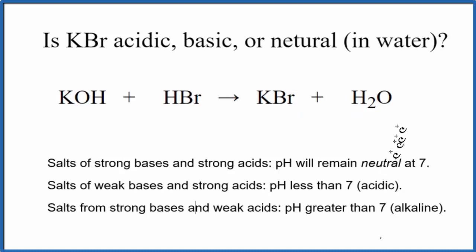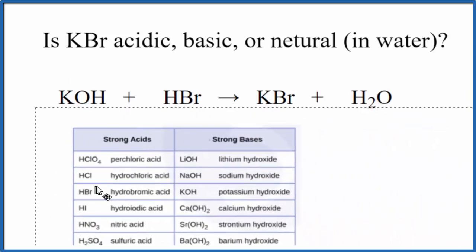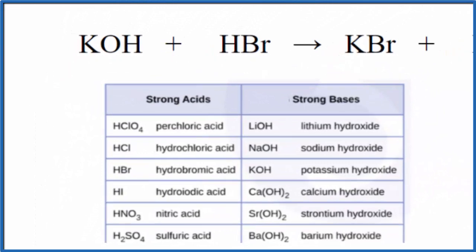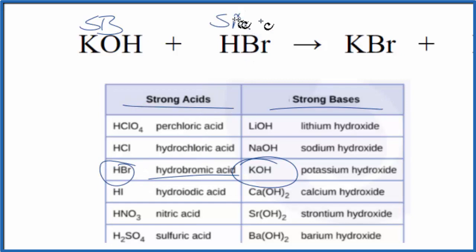To figure out the pH of the solution, we really need to look at whether these are strong or weak acids and bases. This chart here is really helpful, probably a good one to memorize. We look for KOH here, and KOH is a strong base. HBr, right here, HBr is a strong acid. So now we know the strengths of each of these substances.